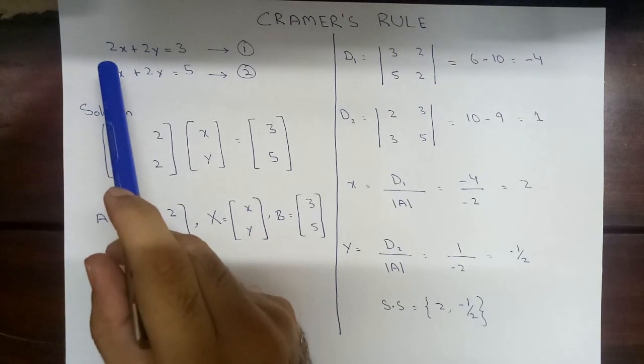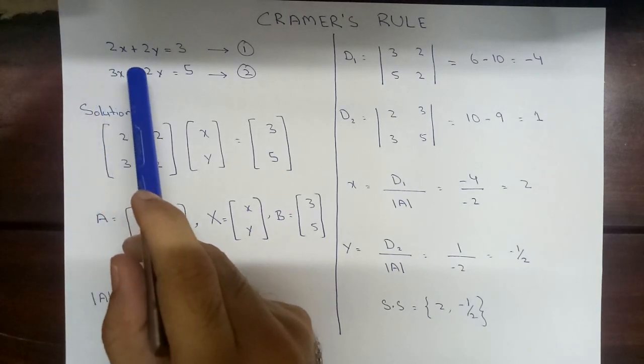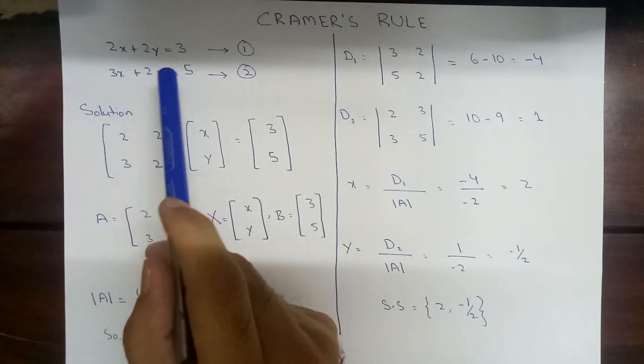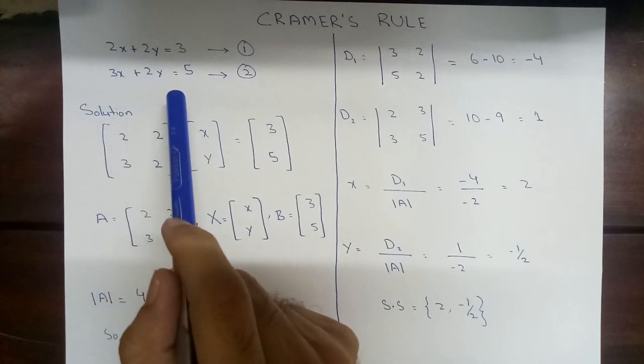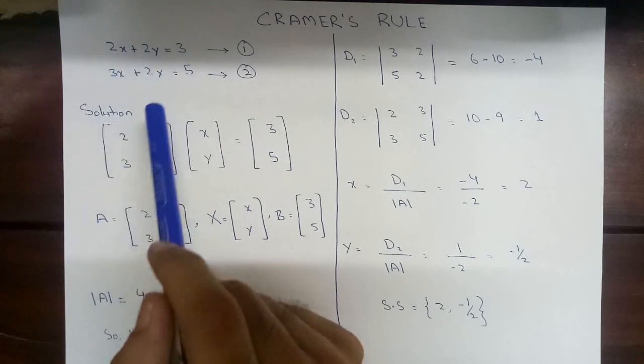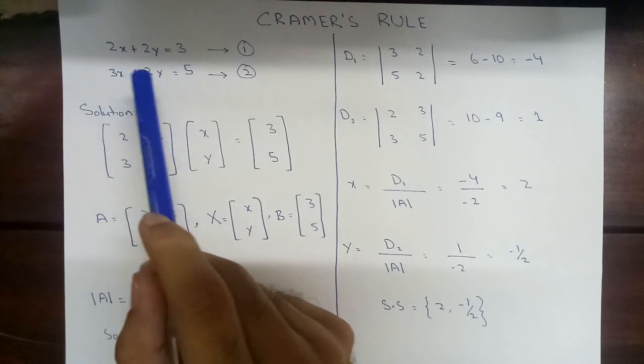Here we have two linear equations: 2x plus 2y is equal to 3, and the second is 3x plus 2y is equal to 5. First of all, we will write it in matrix form.